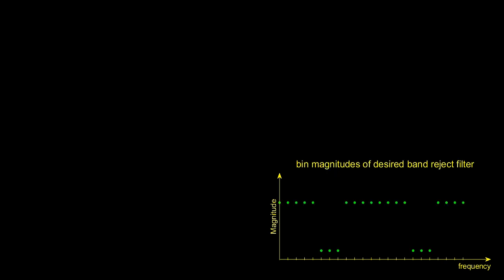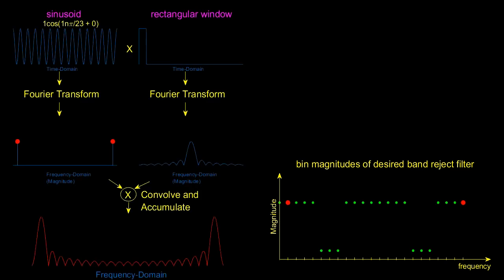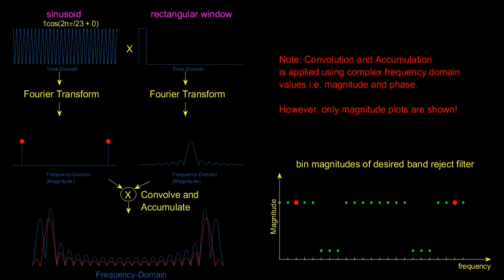Going back to our band reject filter, you can actually think of this as being a combination of lots of prototype bandpass filters like the one we've just seen. With each pair of positive and negative complex exponential pairs being associated with a sinusoid of a particular frequency, which in turn is associated with the bandpass filter of a particular center frequency.